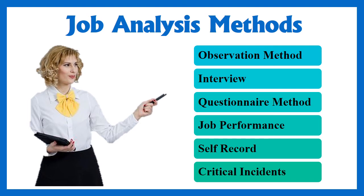Another technique is the records method: the personnel department maintains records of facts regarding jobs and job holders, and the analyst collects information from these records. The last method is critical incidents: job holders are asked to describe incidents concerning the job based on their past experience. These incidents are analyzed and classified, and a clear picture of actual job requirements is obtained by distinguishing between effective and ineffective behavior of workers on the job.